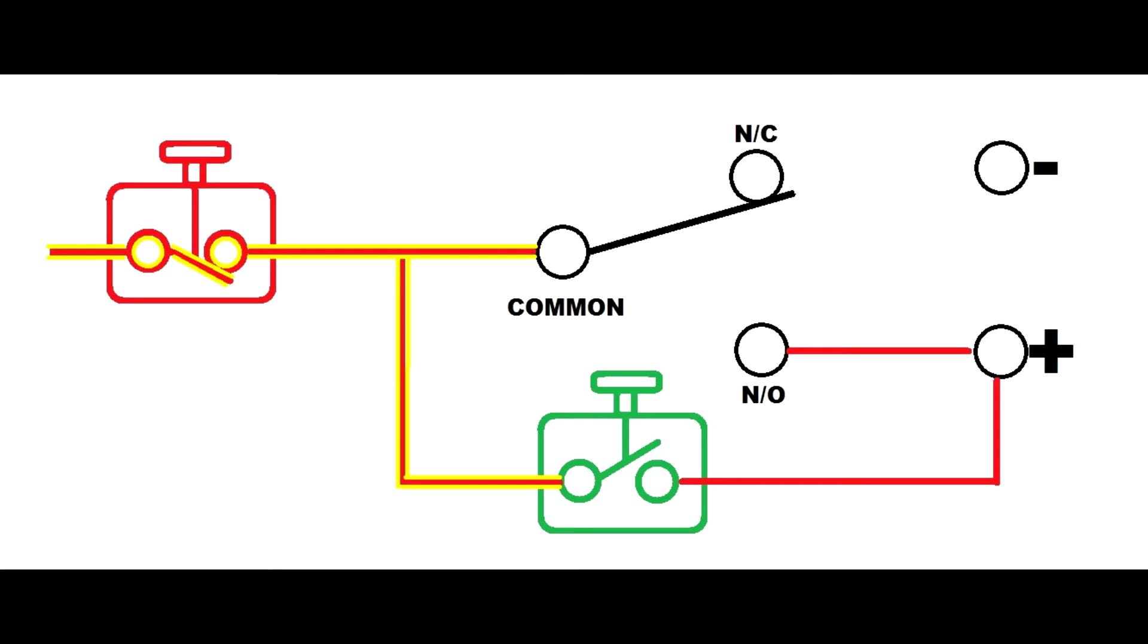On the other side of the start button, we have a wire running to what we'll call the positive side of the coil. In addition to that, we have a wire running from the normally open side of the relay to the positive side of the coil.